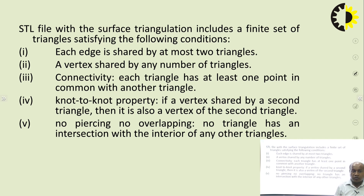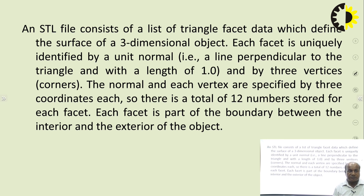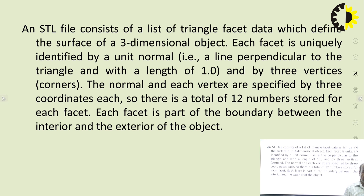An STL file consists of a list of triangles — facets — which define the surface of a three-dimensional object. Each facet is uniquely identified by a unit normal, a line perpendicular to the triangle with a length of one, and by three vertices — the corners of a triangle. The normal and each vertex are specified by three coordinates each, so there is a total of 12 numbers stored for each facet. Each facet is a part of the boundary between the interior and the exterior of the object.